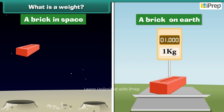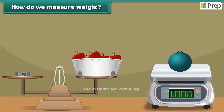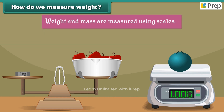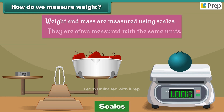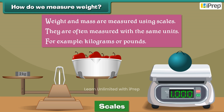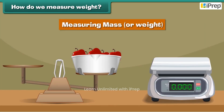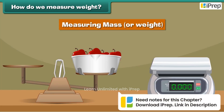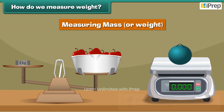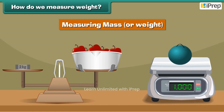How do we measure weight? Weight and mass are measured using scales. They are often measured with the same units, for example kilograms or pounds. Mass is a measure of how heavy something is.